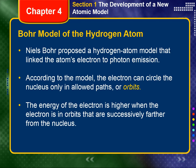The electron orbits, or atomic energy levels, in Bohr's model can be compared to the rungs of a ladder. When you are standing on a ladder, your feet are on one rung or another. The amount of potential energy you possess corresponds to standing on the first rung, the second rung, and so forth. Your energy cannot correspond to standing between two rungs because you cannot stand in midair. In the same way, an electron can be in one orbit or another, but not in between.